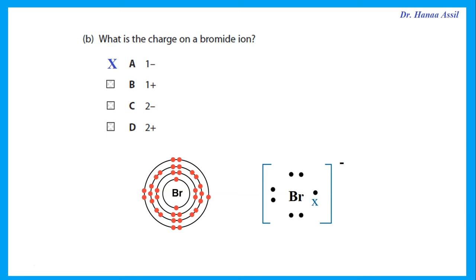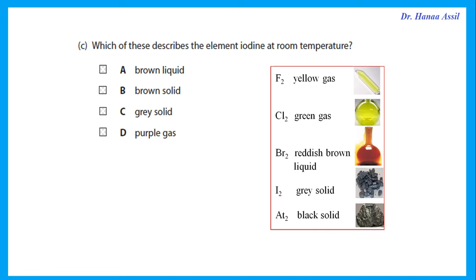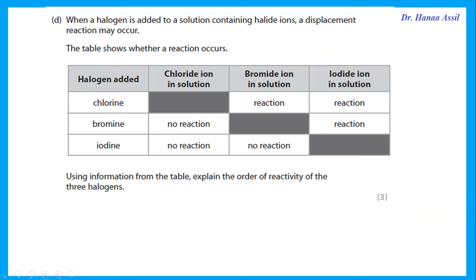Which of these describes the element iodine at room temperature? You need to know that as we go down group seven, the color gets darker — from yellow to green to red-brown to gray to black — and the states go from gas, gas, liquid, solid. Iodine is gray and a solid at room temperature.